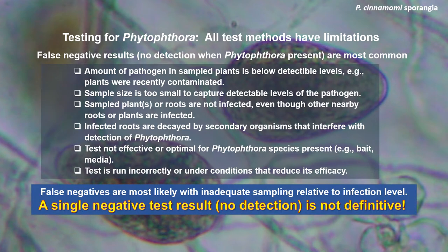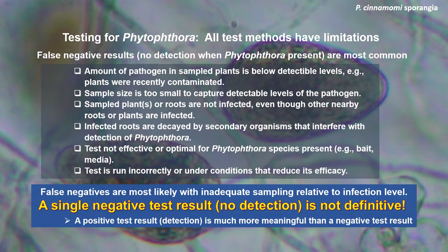Because false negatives can occur, especially with low sampling, a single negative test result is really not definitive. A mistake some people make is they do one test, it comes out negative, and they say these plants are clean. We don't have as much confidence in a negative test because there are many ways to have false negative results. We really want to replicate a negative test multiple times with either multiple replicates from the same batch or repeated testing, particularly in a critical situation. On the other hand, positive test results are much more meaningful — we have this asymmetry where a positive test is much more meaningful than even a couple of negative tests.